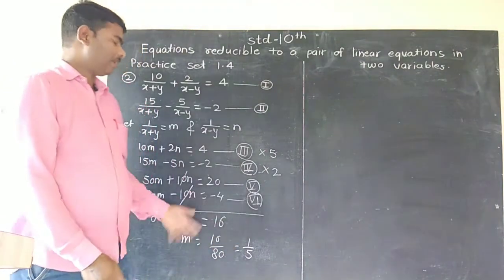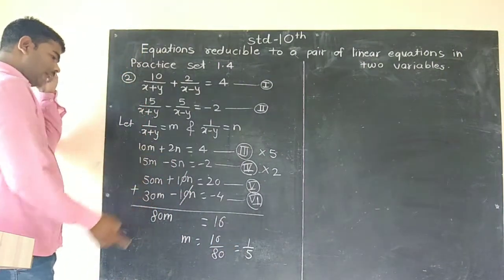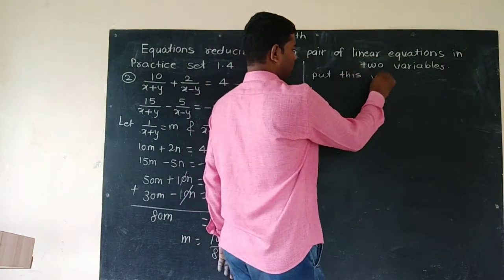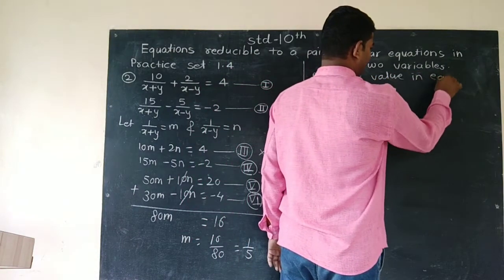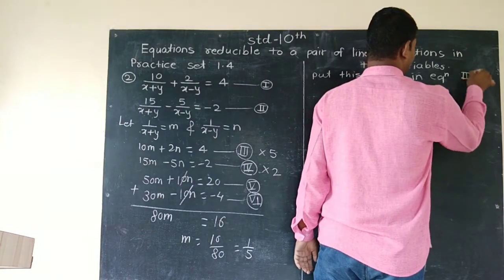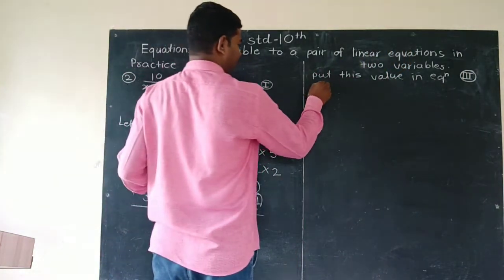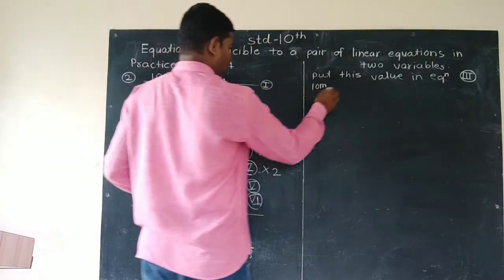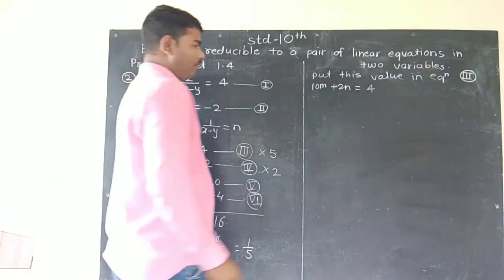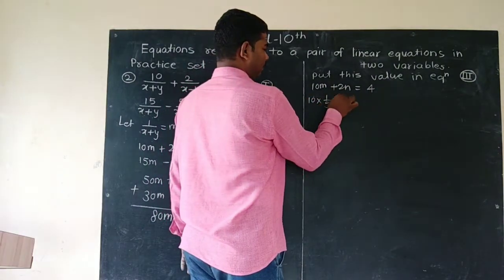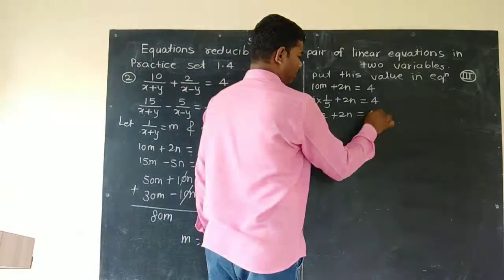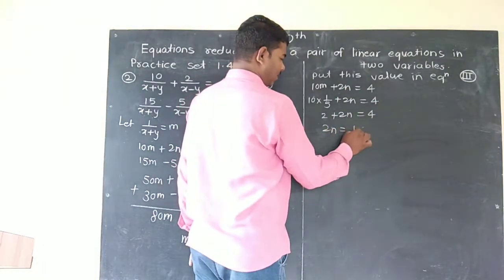Since m is equal to 1 upon 5, we put this value into equation 3. Substituting into 10m plus 2n equals 4: 10 into 1 upon 5 gives 2, so 2 plus 2n equals 4. Therefore 2n equals 4 minus 2, giving 2n equals 2, so n equals 1.